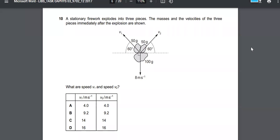In this worked example, we're taking a look at a stationary Death Star that explodes into three pieces. The masses and velocities of the three pieces immediately after the explosion are shown. We're trying to solve for the speed v1 and v2. The word explosion gives you a clue that we want to use momentum conservation. So the initial momentum equals the final momentum.